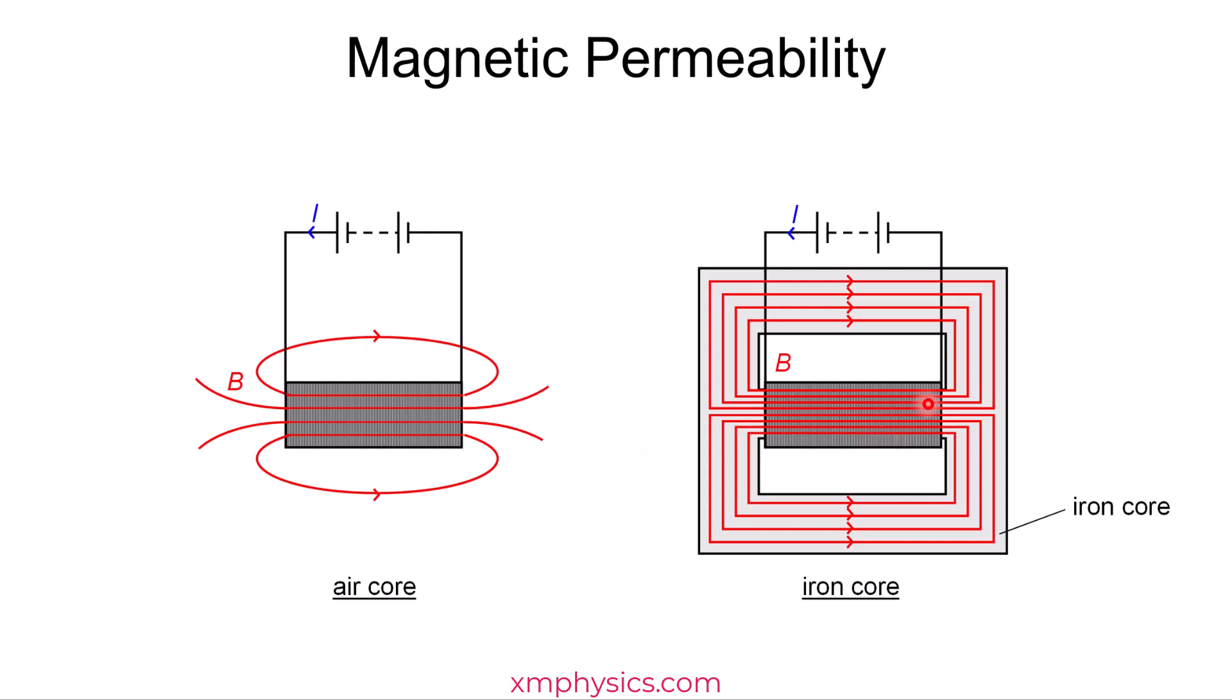So if somebody asks you, what is the purpose of inserting the iron core in the solenoid? One way to answer is to say, well, so that the iron itself gets magnetized and the magnetic field it produces is actually much stronger than the magnetic field of the solenoid which triggered it.